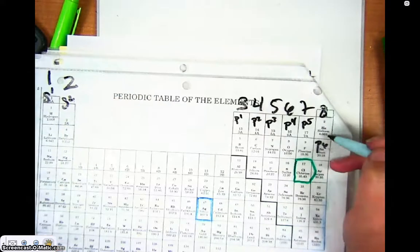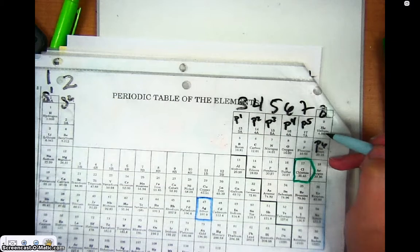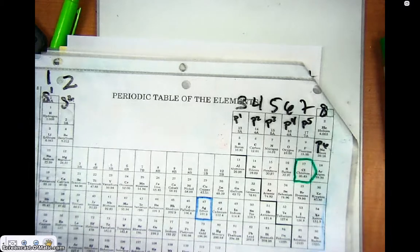Now, helium is the exception. Helium is actually going to be a 2. So what your column number is determines how many valence electrons you have.